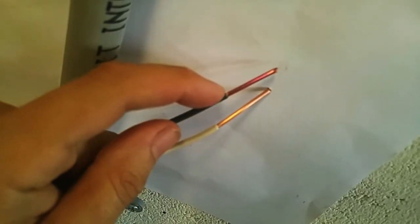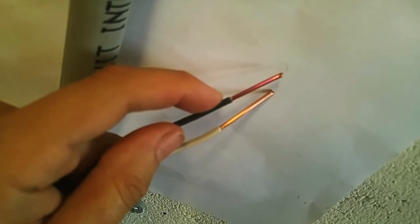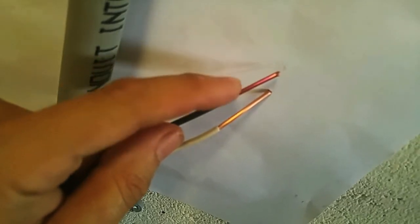See the difference in the color on the exposed copper? The hot wire has a coating on it that will reduce conductivity. I'm going to sand it off.